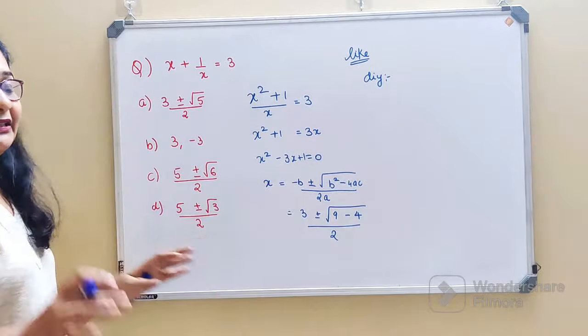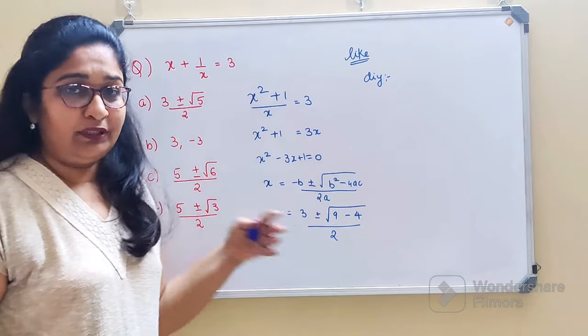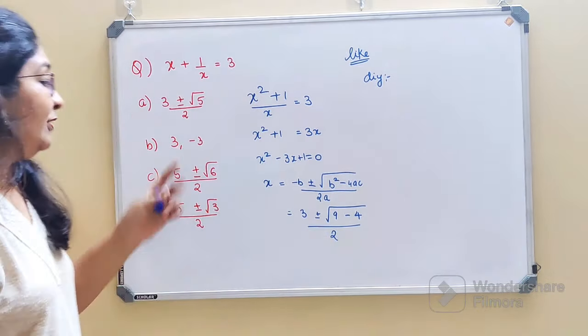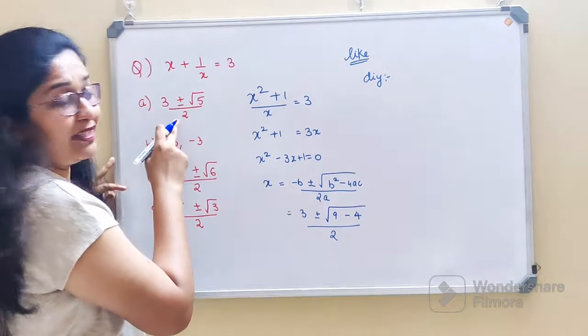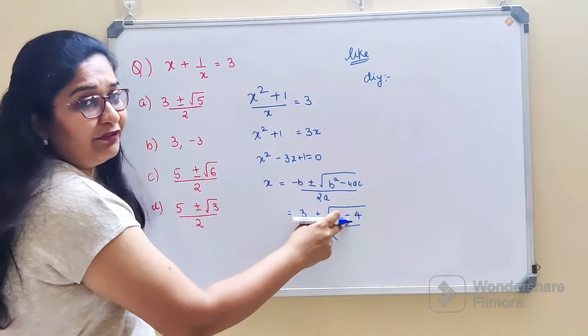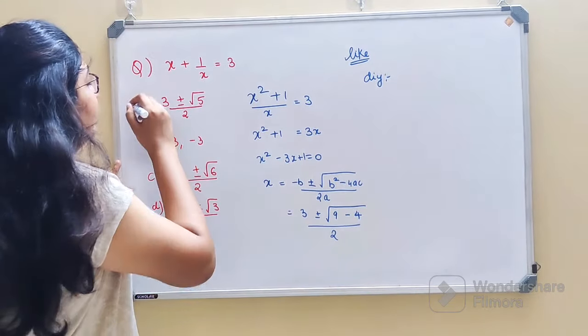Minus 4 into 1 into 1, so that gets you minus 4 upon 2 into 1, that gets you 2. Now let me understand, you don't need to solve this further. You can do it directly over here and you can see that we need 3, and over here only one option has 3 and a plus and minus.